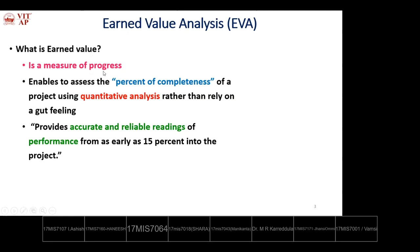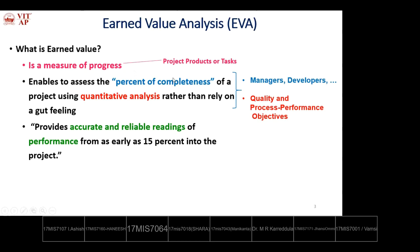Earned Value is a measure of progress — specifically, the progress of various project products or tasks. Intermediate-level project products' progress is assessed and reported. It enables project managers and developers to assess the percent of completeness of a project using quantitative analysis, rather than relying on a gut feeling.